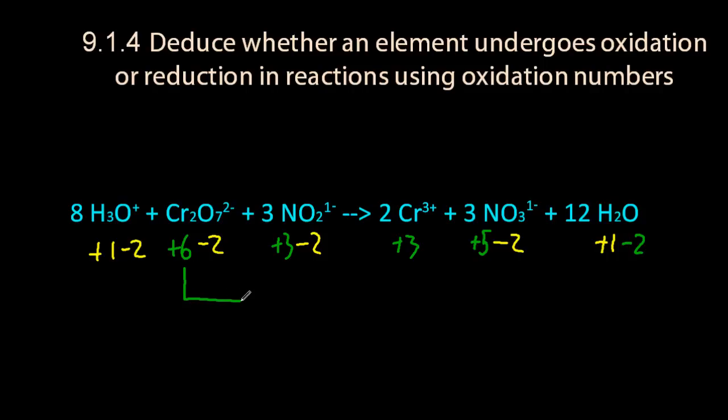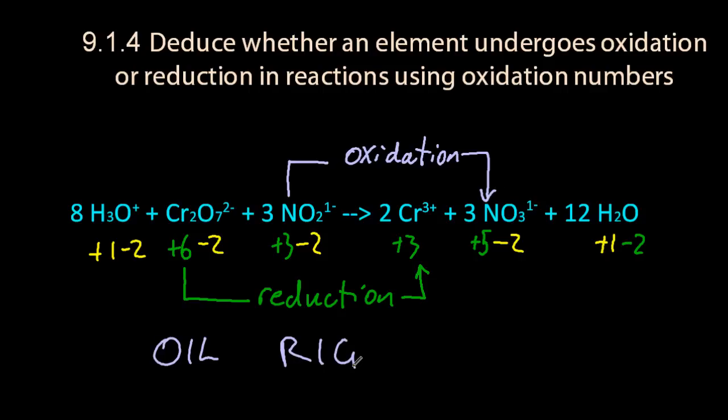So let's go from chromium, which is plus 6, all the way to chromium, which is plus 3. The oxidation number has been reduced, it's gone down, so that's called reduction. And nitrogen, the oxidation number has gone up, so that's called oxidation. And that's easier than thinking about it in terms of oil and rig.